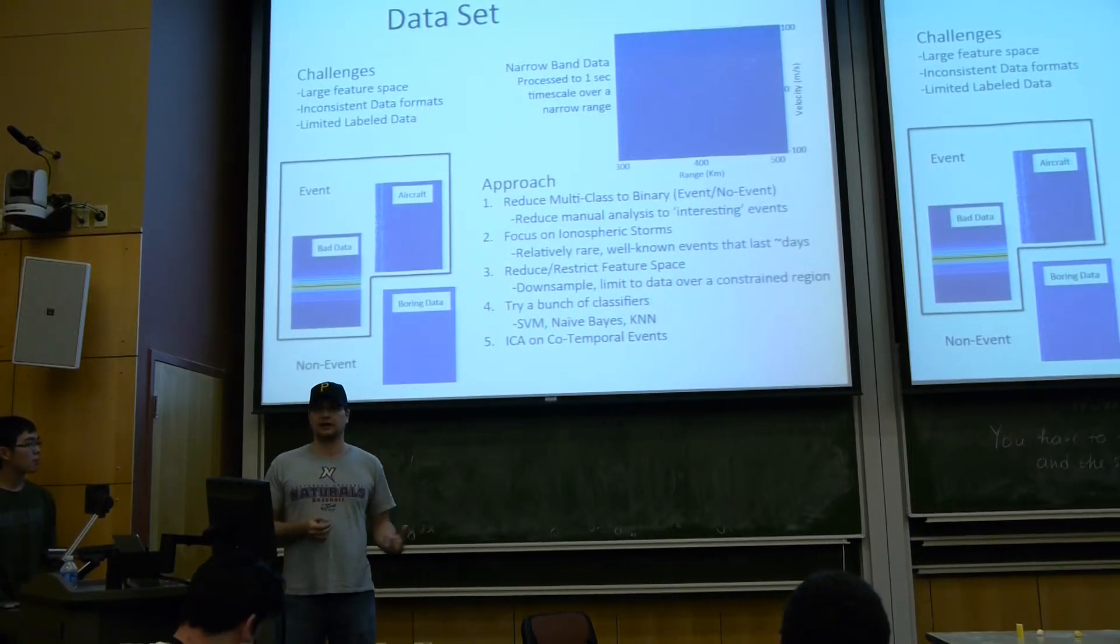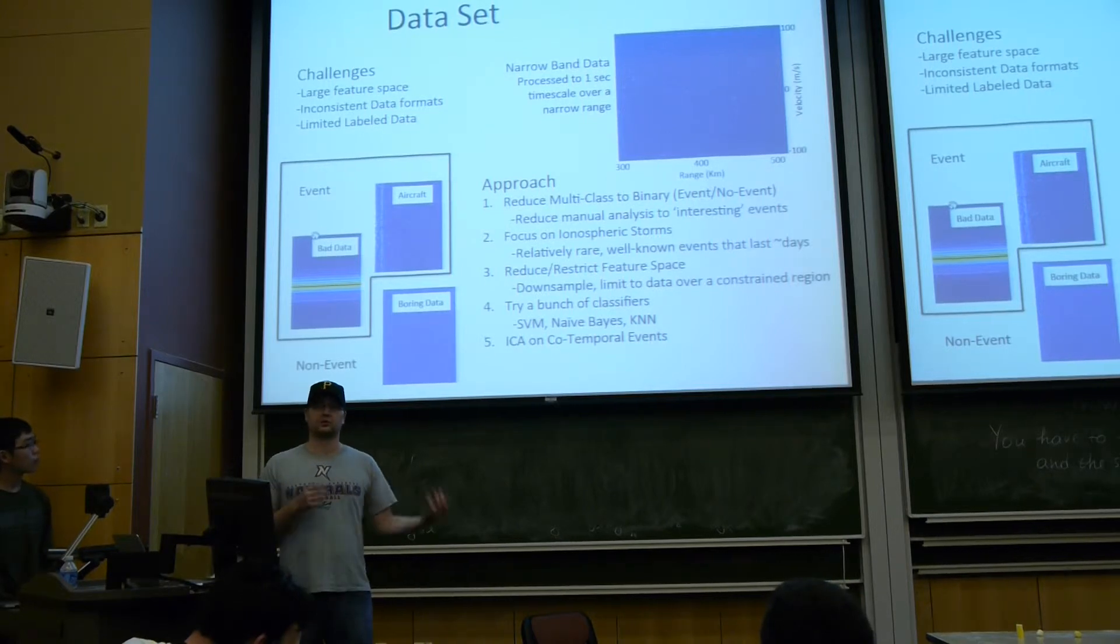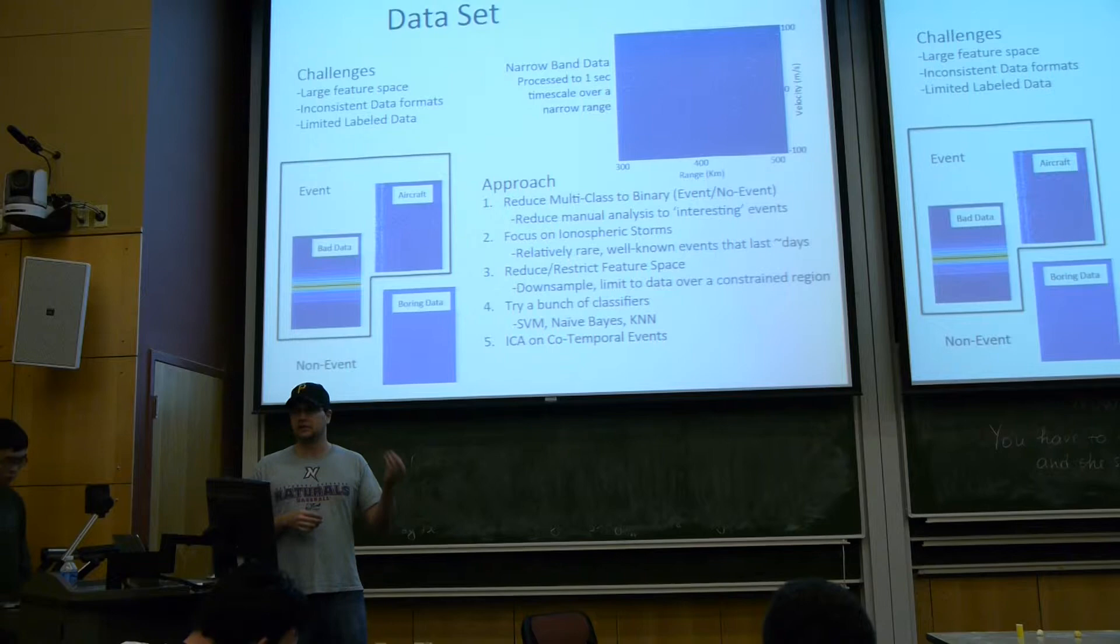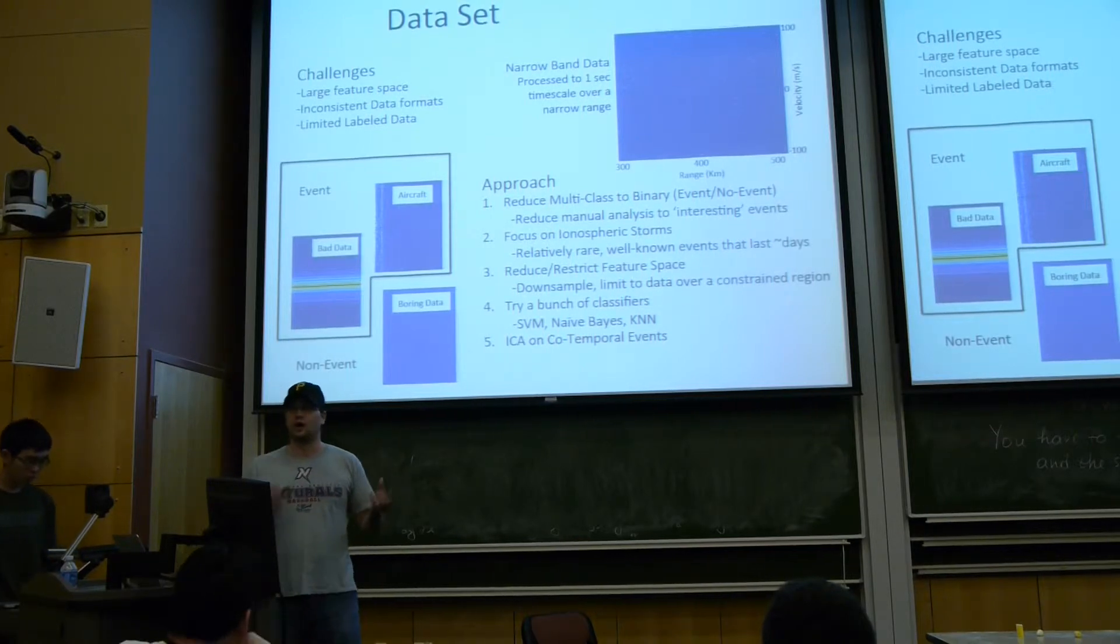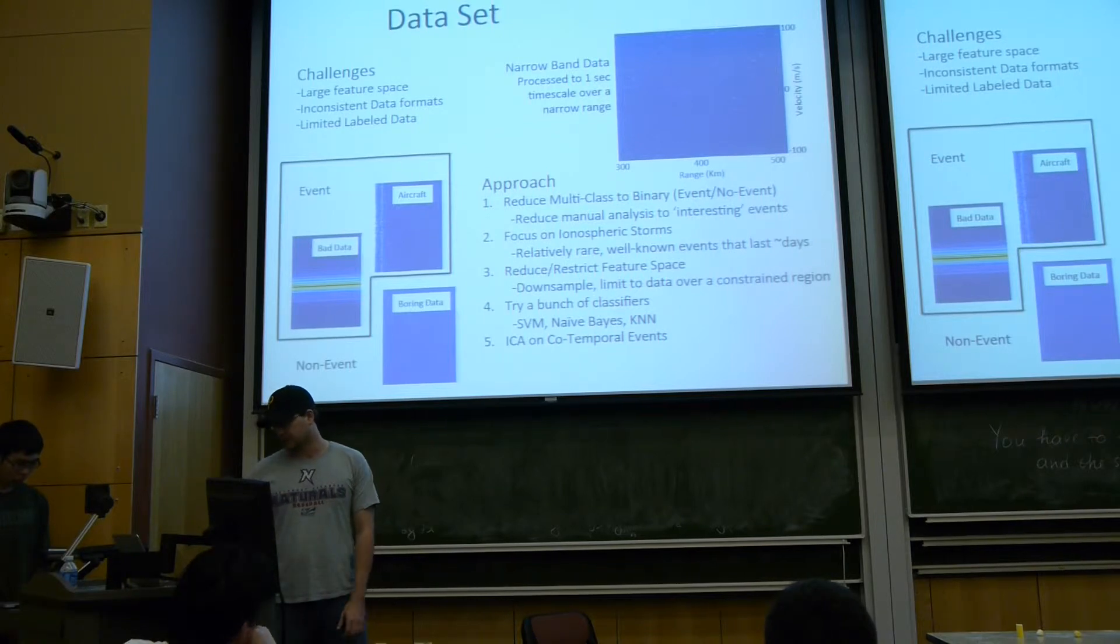Another thing we did to simplify it was to group all of the events of interest, since these are relatively infrequent compared to typical data. We considered bad data, meteor data, ionospheric storms, all as just events of interest. If we can at least reduce the spectrum from all these years of data to a potentially interesting set, it reduces the burden on the scientists.